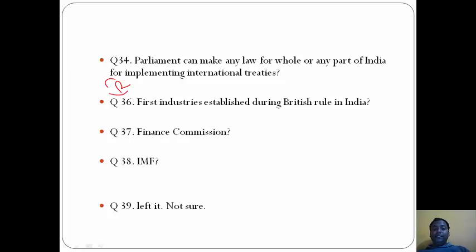Question 36: First industries established during British rule in India are cotton textile industry and jute industry, so that is A.